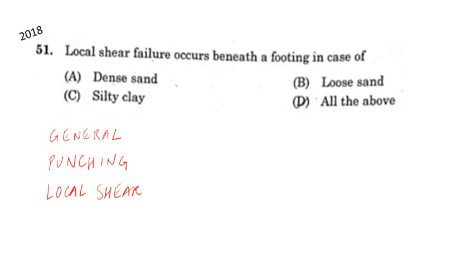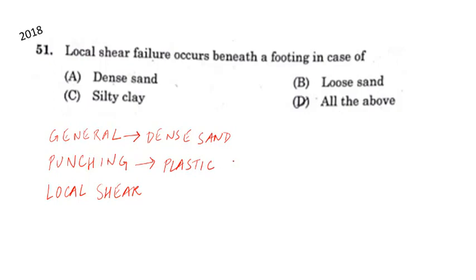The general shear failure mode is typical of soils possessing brittle-type stress-strain behavior — for example, dense sand. Punching shear failure occurs in soils possessing the stress-strain characteristics of a very plastic soil, which is cohesive soil.